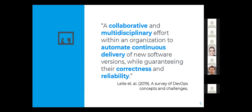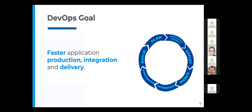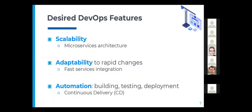Before going any further, we need to talk about what we understand by DevOps, because this concept has been given many definitions, so we need to establish some common ground. This definition is, in my opinion, a good one: a collaborative and multidisciplinary effort within an organization to automate continuous delivery of new software versions while guaranteeing correctness and reliability. Oversimplifying things a bit, the main goal of DevOps is to accelerate the production, testing and delivery of applications.